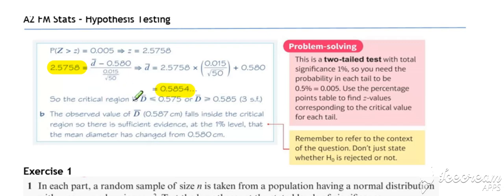And we pull out our two critical values. So d-bar either needs to be less than 0.575 or greater than 0.585 to cause us to reject the test. And that's our critical region.